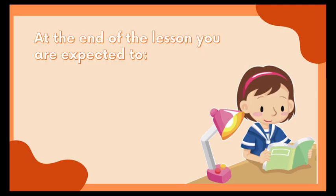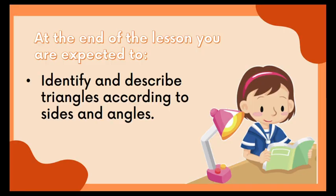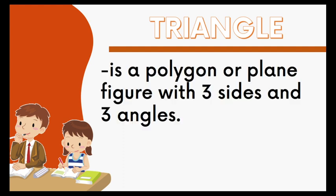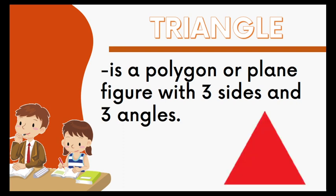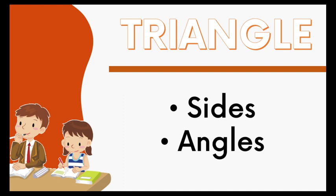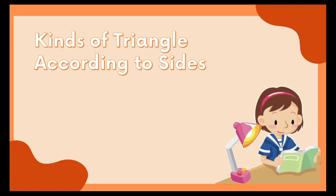At the end of the lesson, you're expected to identify and describe triangles according to sides and angles. But first, let us know the meaning of a triangle. A triangle is a polygon or plane figure with three sides and three angles. A triangle can be grouped according to its sides and according to its angles.